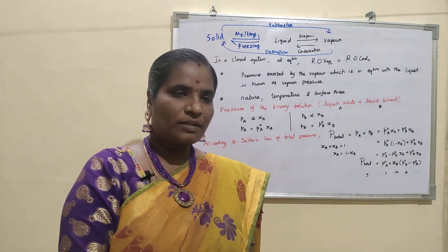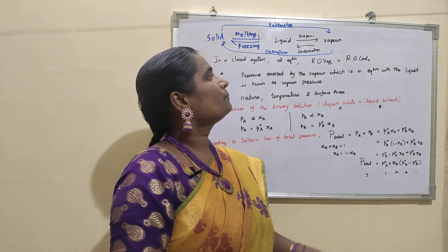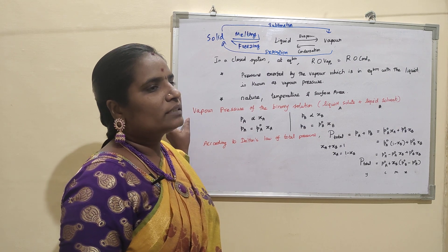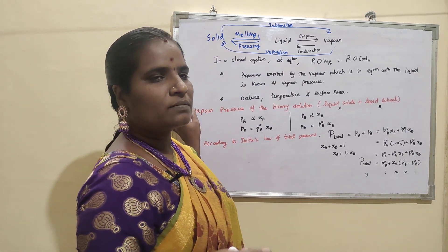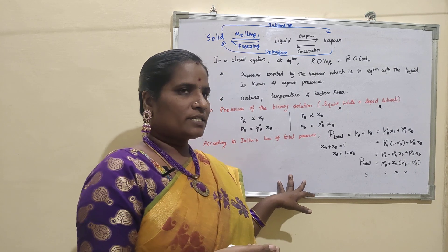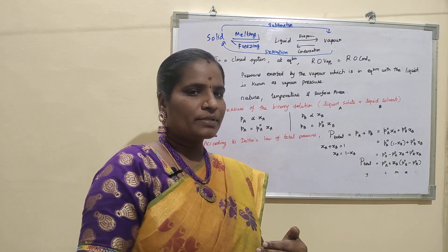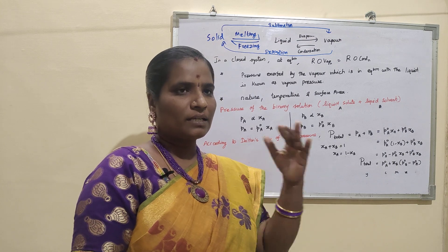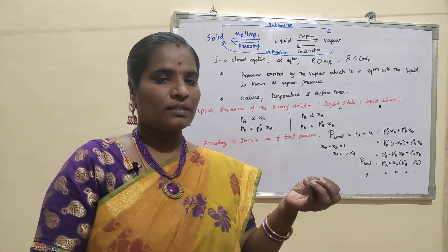We are going to study the phase transition and the vapor pressure of a binary solution made up of a liquid solute and a liquid solvent. First, what is phase transition? Consider water as an example. Ice melts into liquid water, and liquid water can be evaporated to the gaseous state. By applying pressure or reducing temperature, we can bring water vapor back to liquid water, and by freezing it, liquid water becomes ice again. This is known as the phase transition of water.